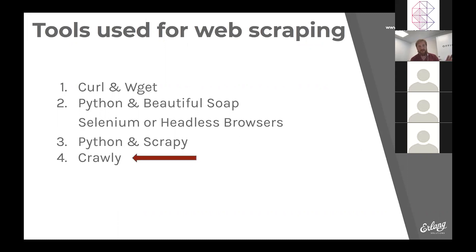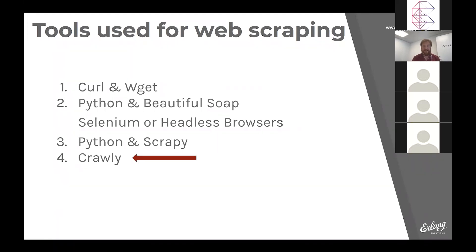Another approach is something more custom — Python with Beautiful Soup, a popular choice for people doing data extraction. It can be combined with browser-like tools that allow you to render pages as they would look to end customers. This approach is nice and interesting to hack. However, the more you hack, the more you think it's better to have something already built for you that reuses knowledge others have gained in the battle of data extraction.